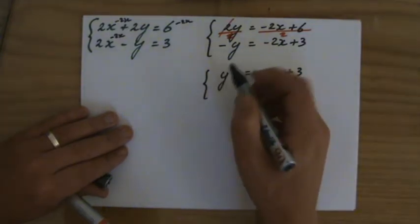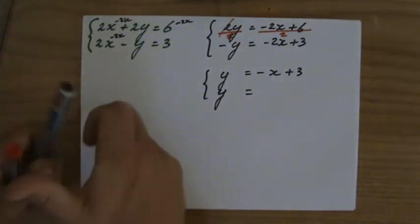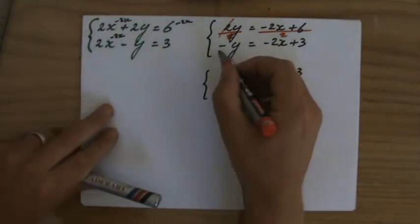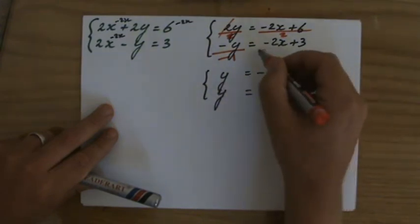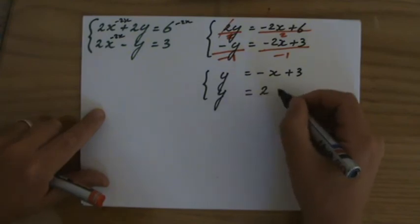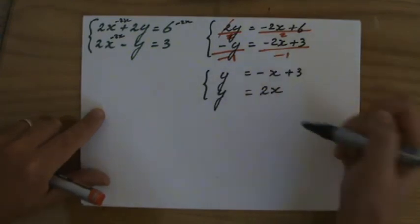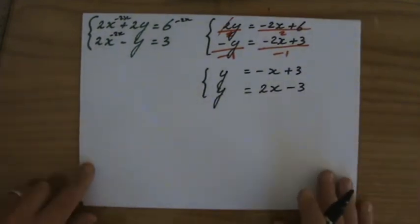The second equation, it's minus y, I want it to say y. So how do I get rid of that minus sign? Well, for instance, by dividing it by minus 1, then it turns into y. So everything else divided by minus 1 as well. The result is the signs will change. Minus 2x becomes positive 2x. And a positive 3 becomes minus 3.